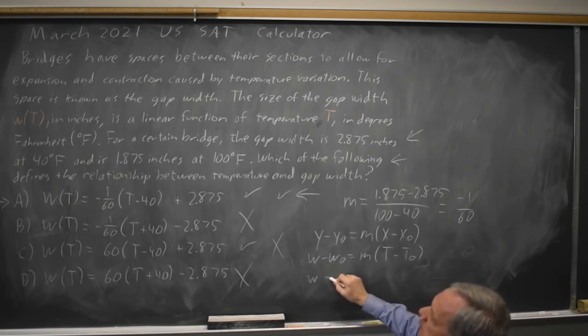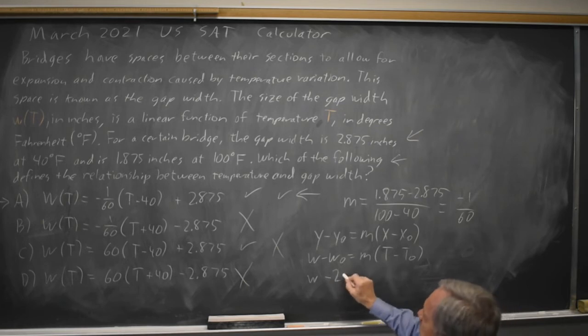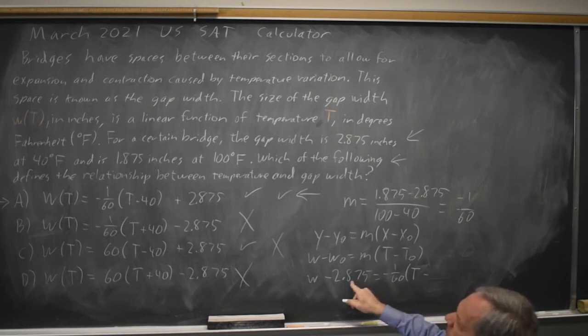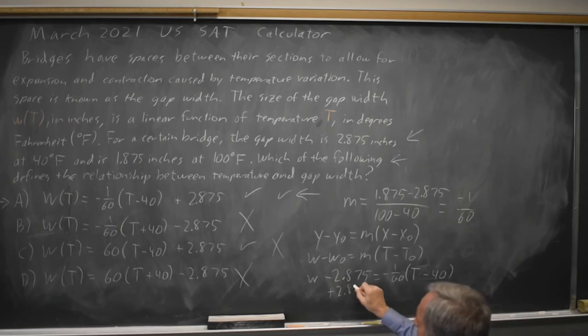So w minus the width of 2.875 equals my slope, which I found was negative 1 over 60, times my temperature minus the temperature that was associated with 2.875, which is 40, and if I add 2.875 to both sides,